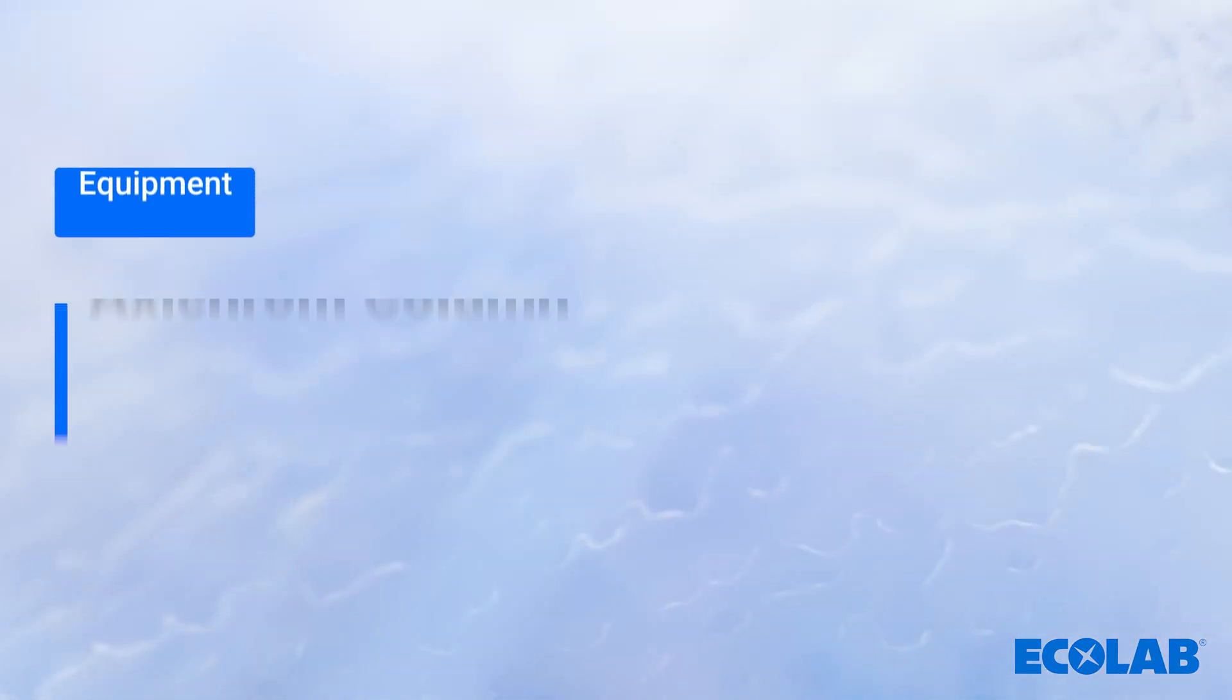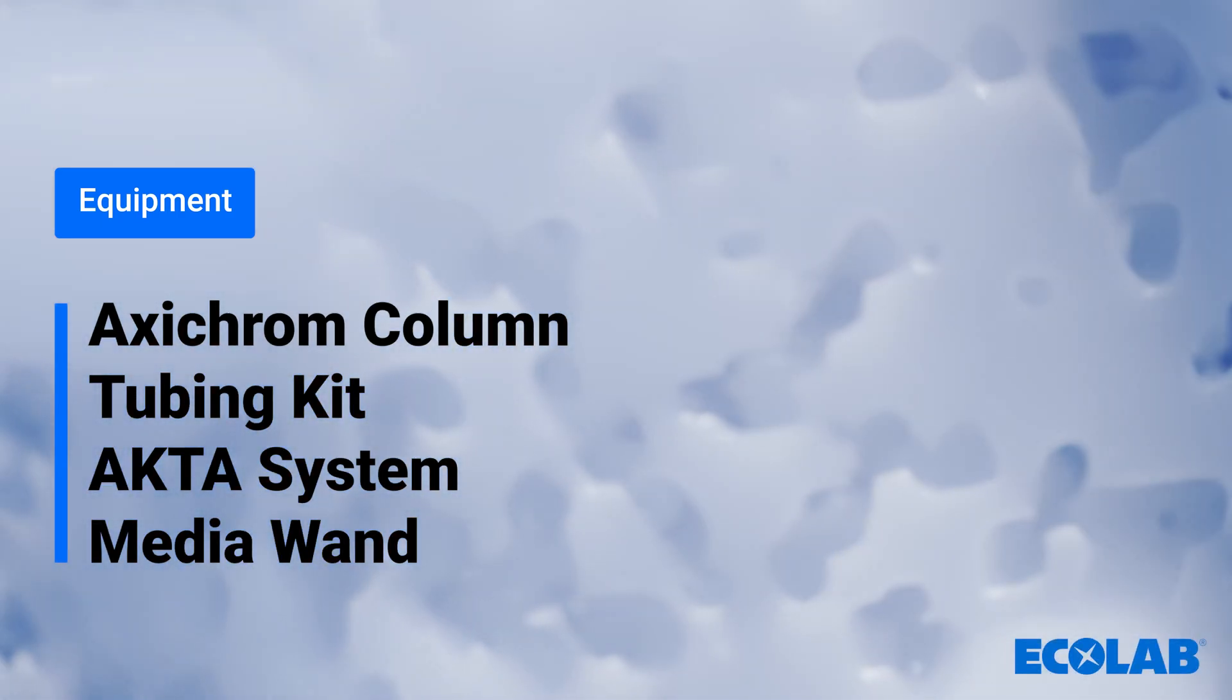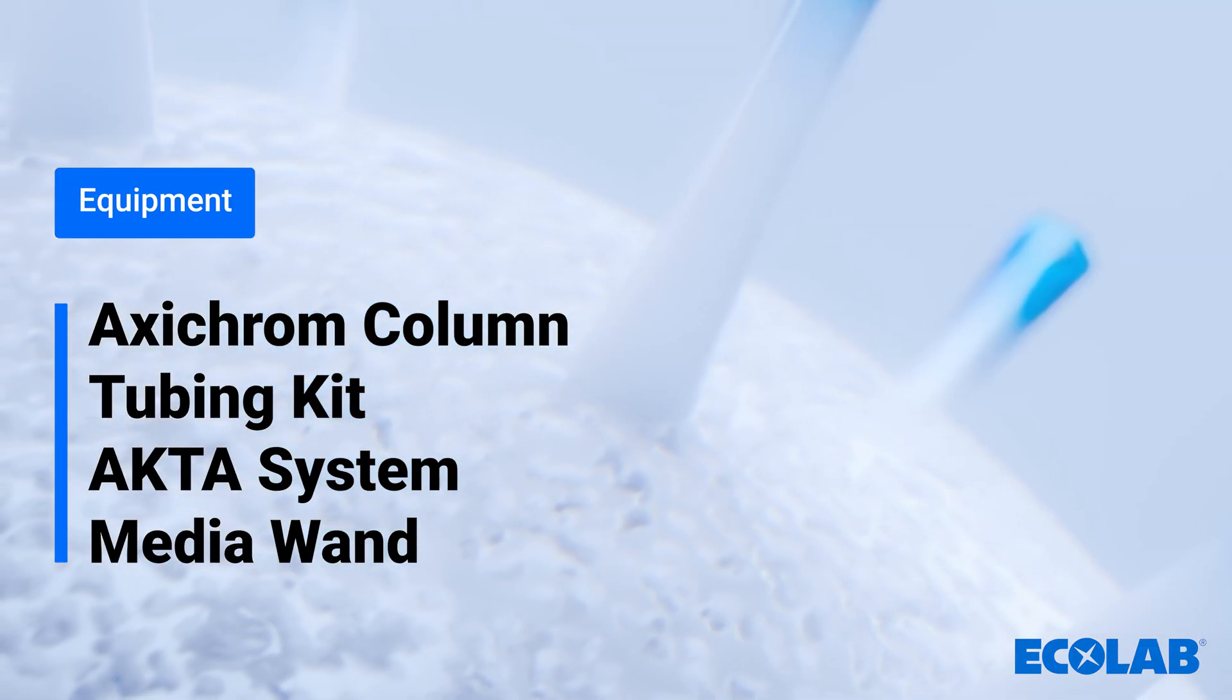The equipment required is an axiom column at a 7-20cm ID. In this video, we'll be demonstrating with a 7-centimeter ID column. You'll need tubing kit, an actor system, and a media wand.